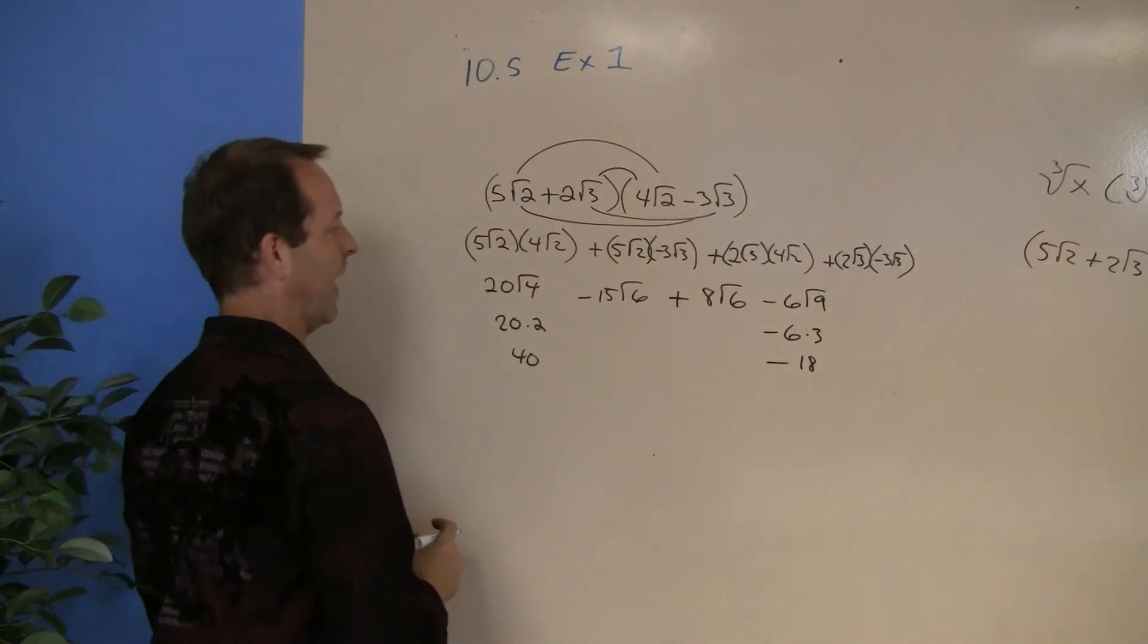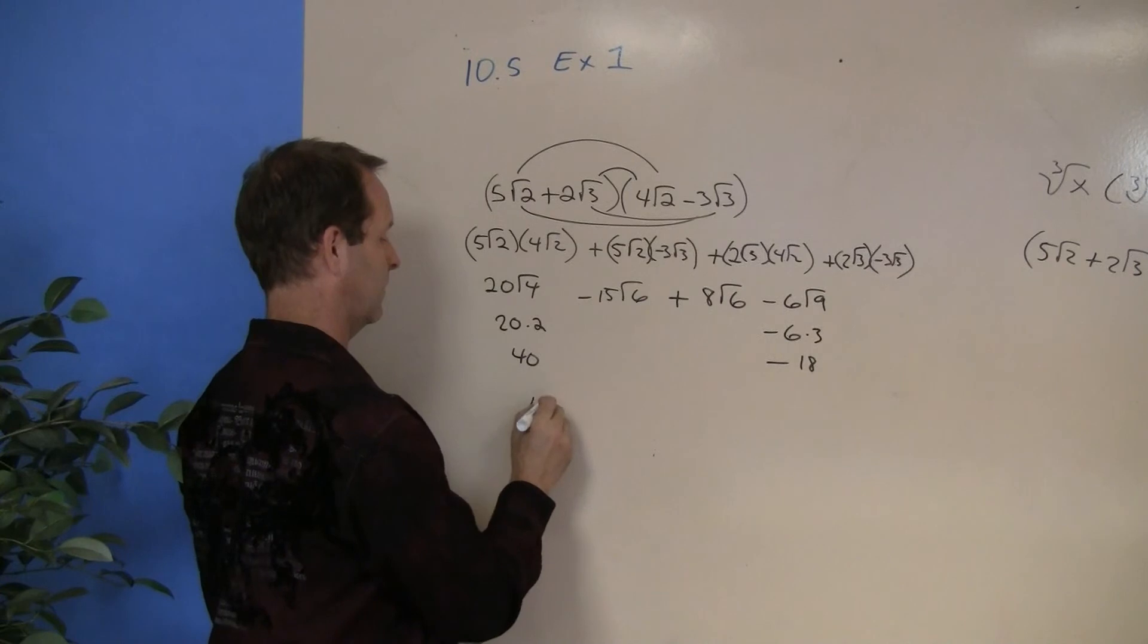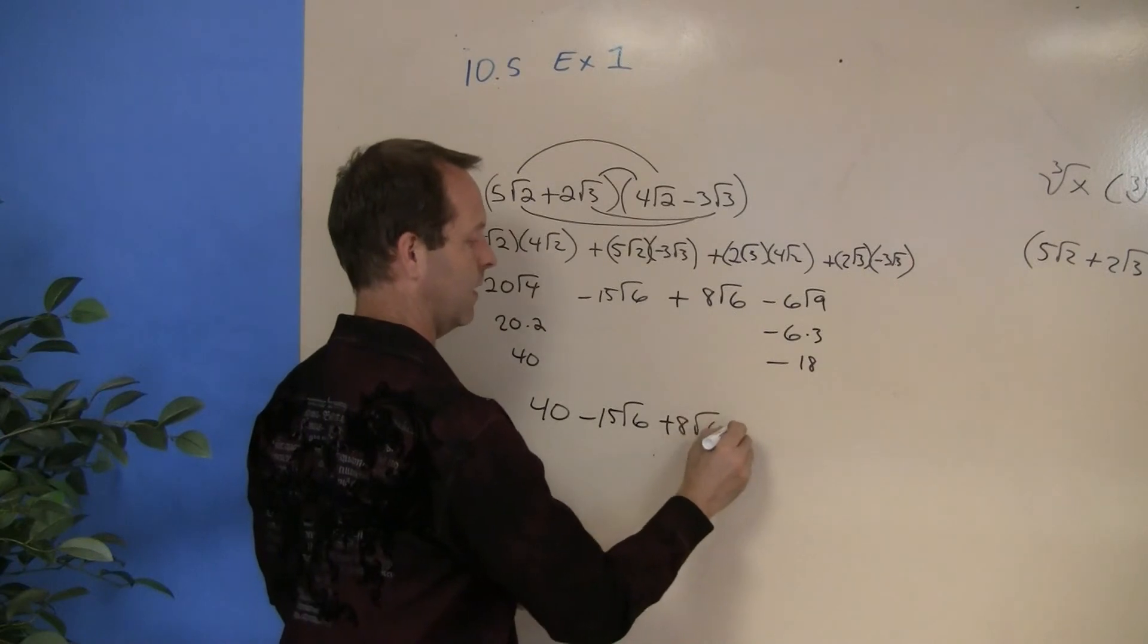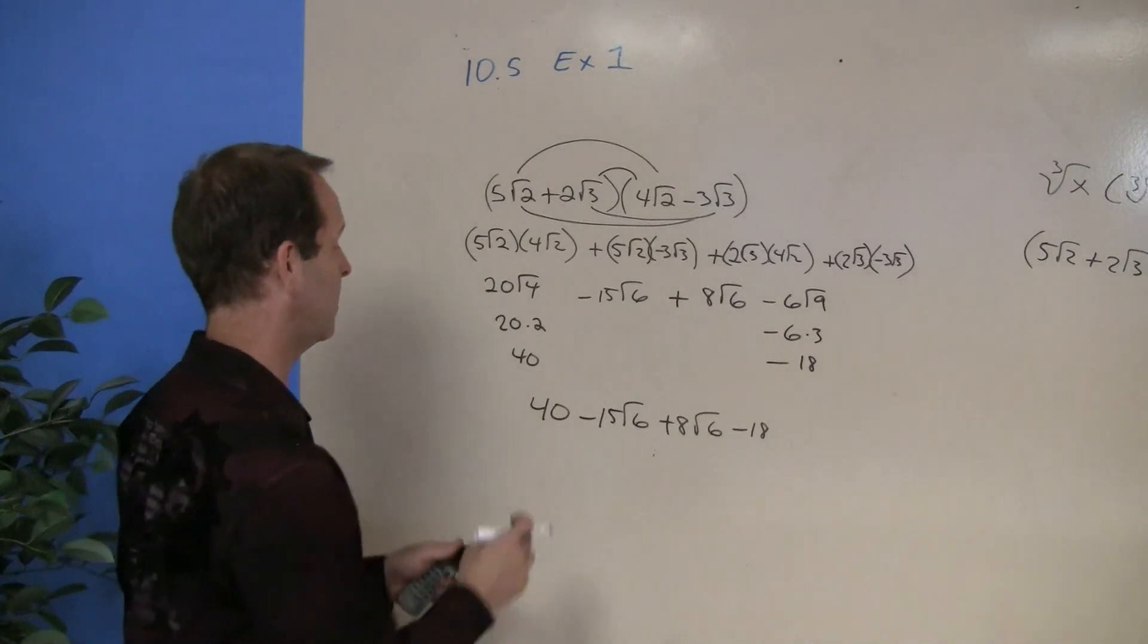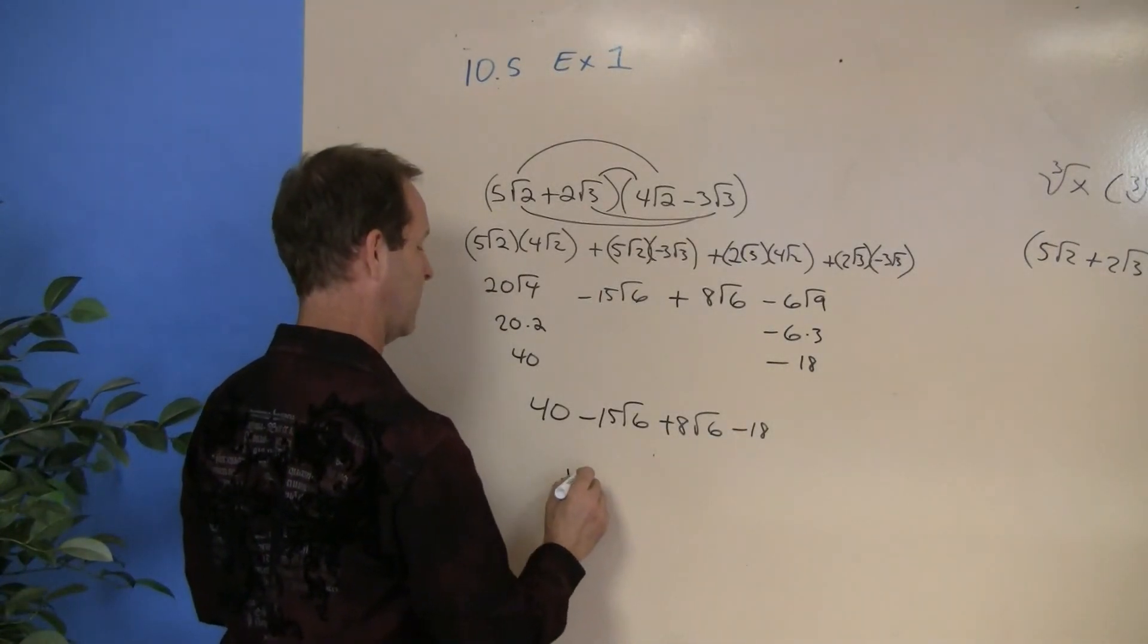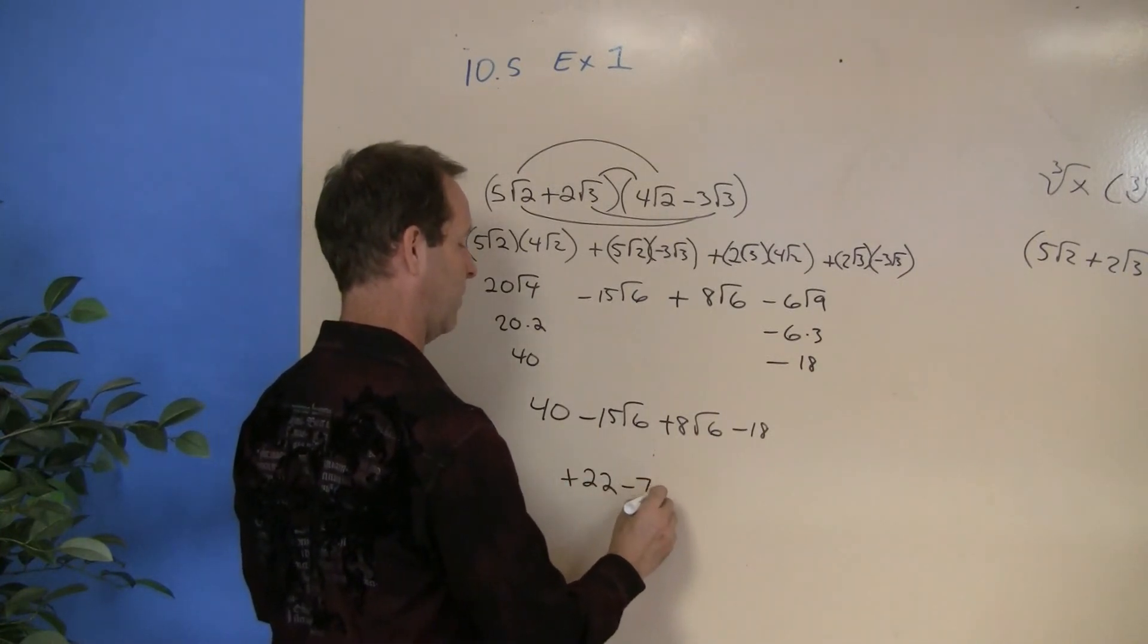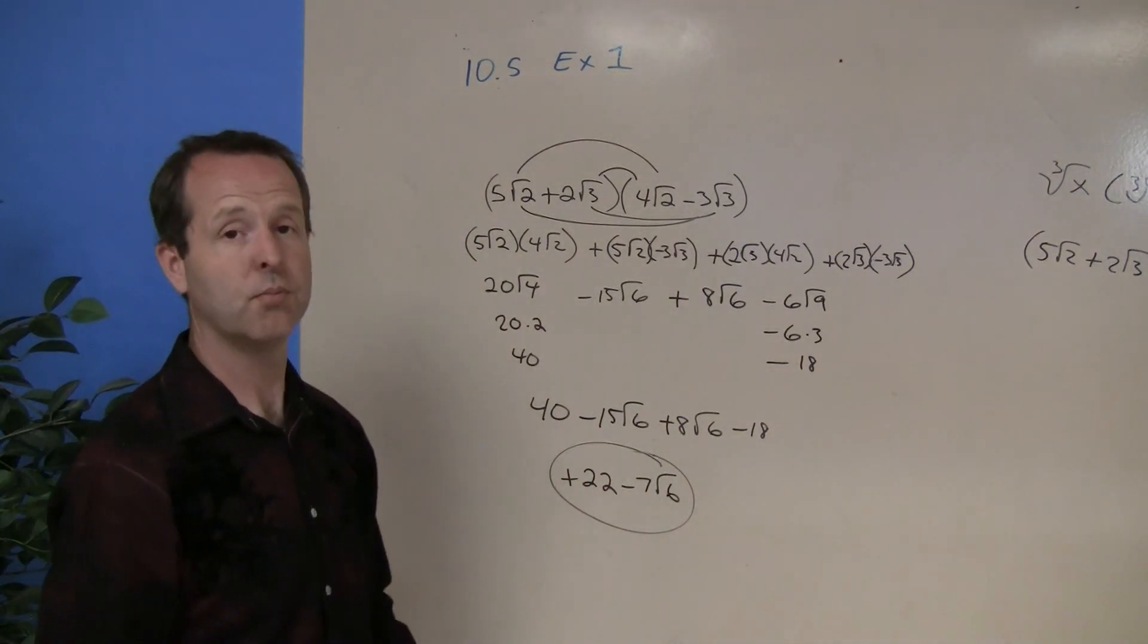So let's clean this up a little bit and see what I have. The first term, when I multiplied everything together, gave me a 40. Minus a 15 root 6. Plus an 8 root 6. Take away an 18. And now I have some common terms or like terms that I can add up. 40 and a negative 18 gives me a positive 22. And negative 15 root 6s plus 8 root 6s give me minus 7 root 6s. So there's my final answer to that original problem.